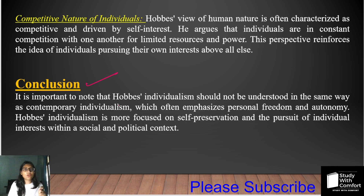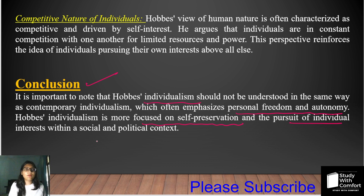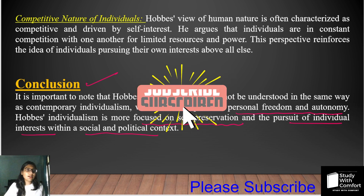You will conclude that what we refer to as Thomas Hobbes's individualism is basically this: because he emphasizes personal freedom and autonomy of individuals and gives people rights for self-preservation and the pursuit of self-interest — individualism in the social and political context. This was Thomas Hobbes as an individualist. I hope that you have come to understand. If you have any doubt, comment below.